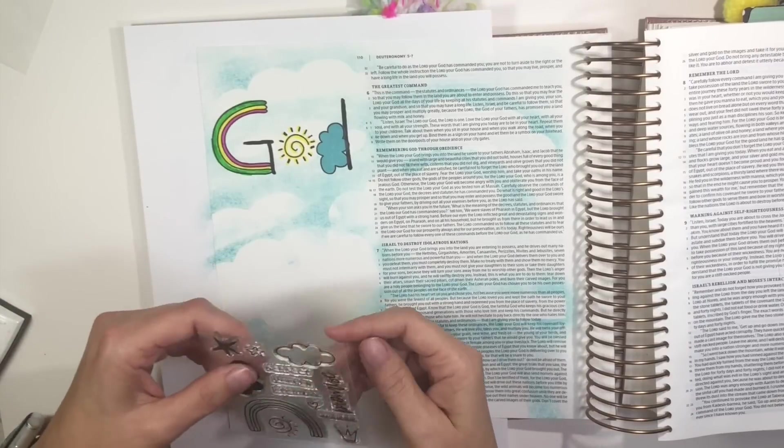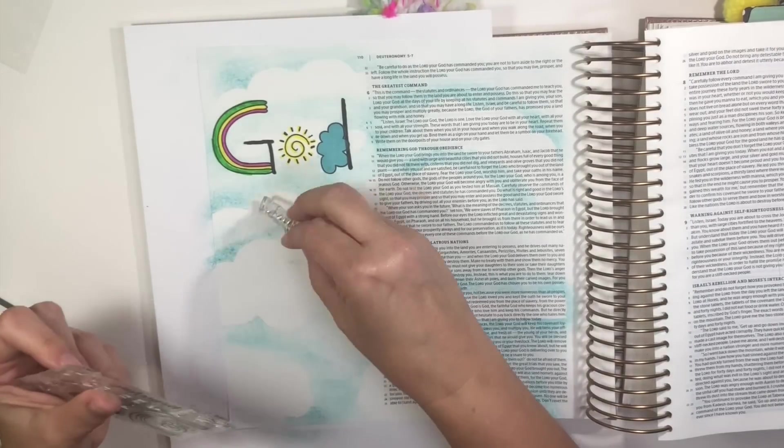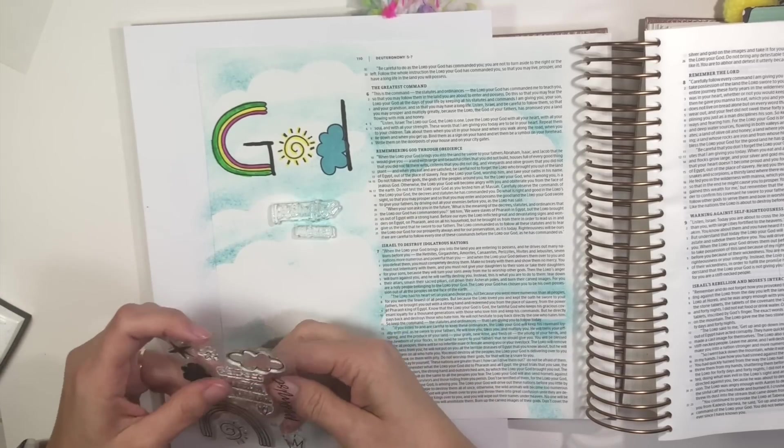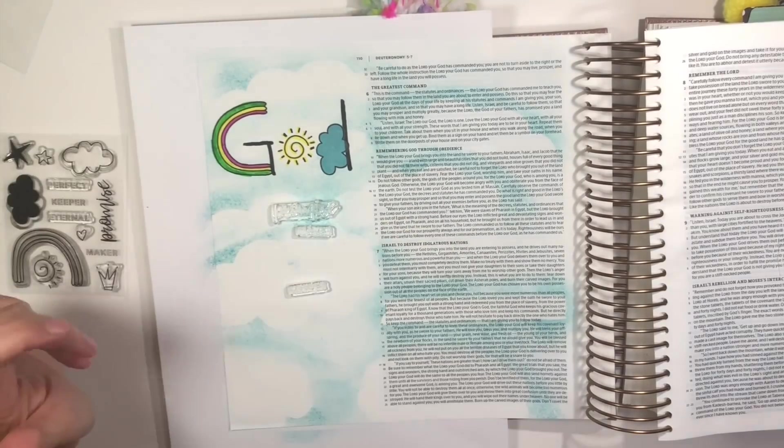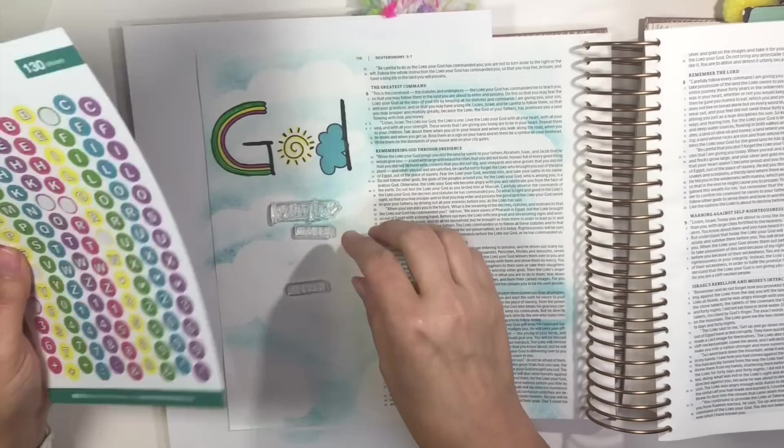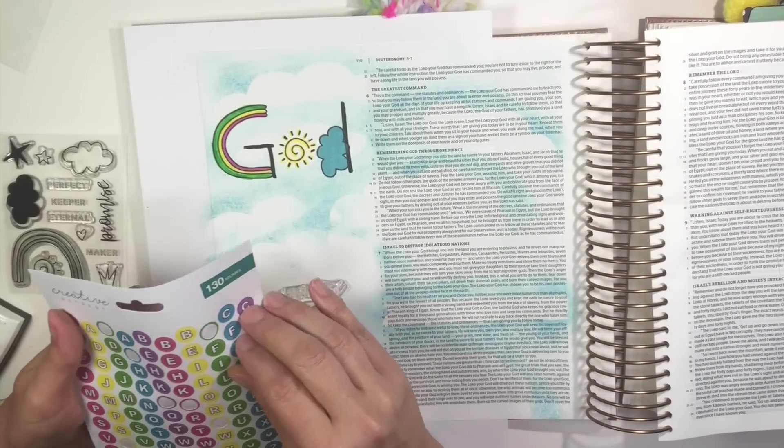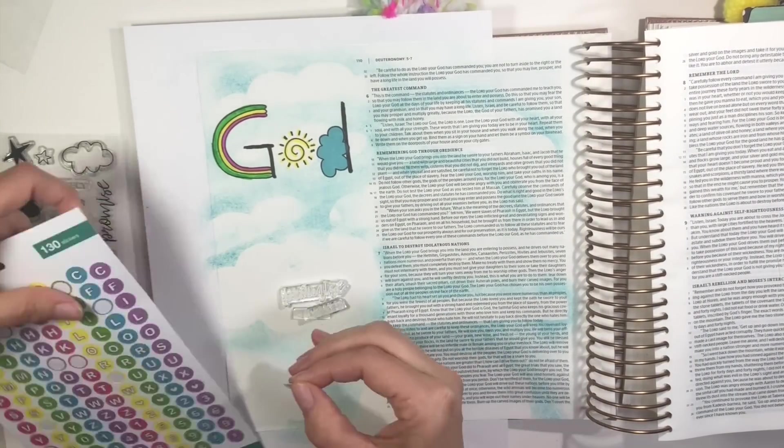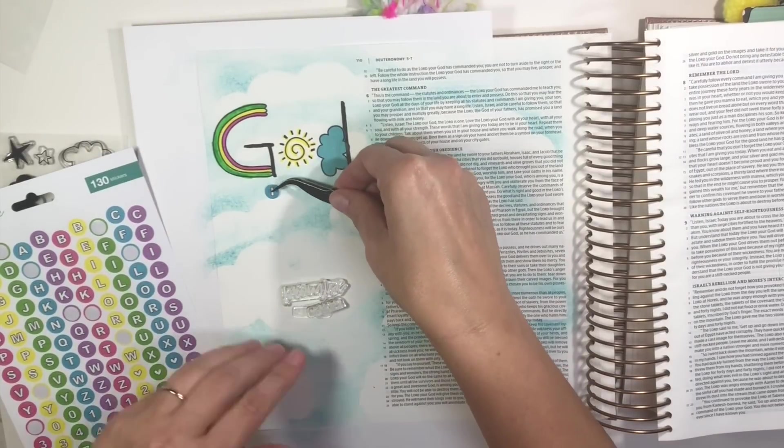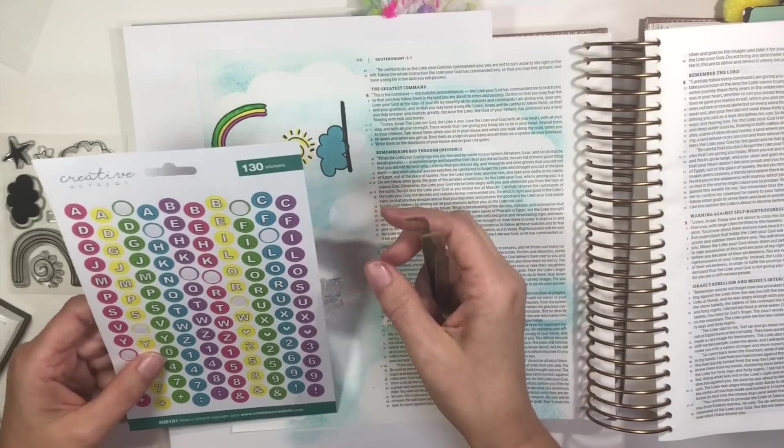And God made the rainbows. He made the clouds. He made the sun. And so, those things came from Him. They are a part of Him. So, I decided to use those stamps to spell out the word God.